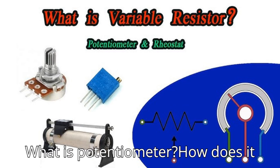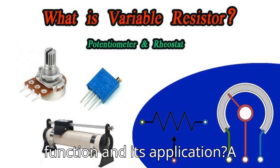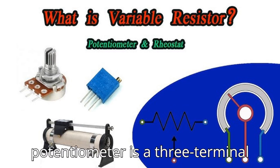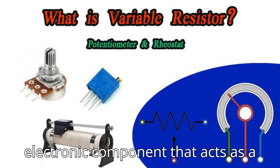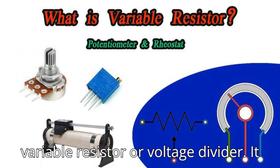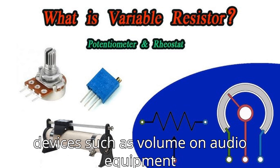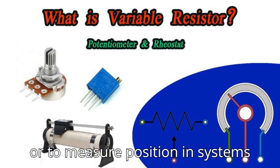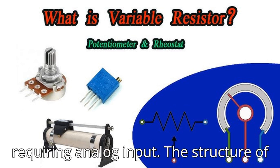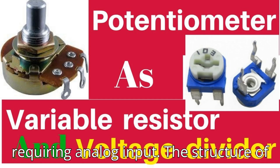What is a potentiometer? How does it function in its application? A potentiometer is a three-terminal electronic component that acts as a variable resistor or voltage divider. It is commonly used to control electrical devices such as volume on audio equipment or to measure position in systems requiring analog input.